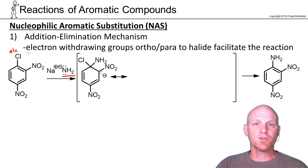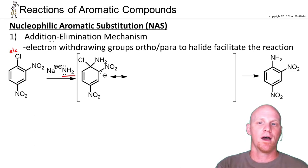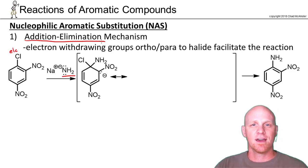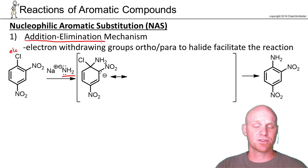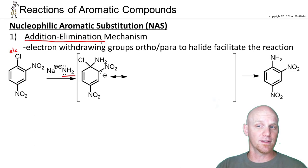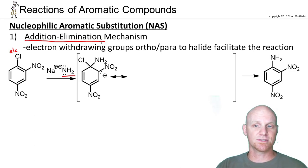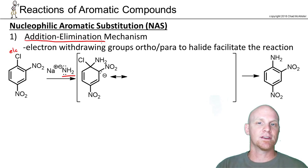It turns out there are two mechanisms and not just one. The first one is called addition-elimination, because there are two steps: the first one is addition and the second one is elimination. The second mechanism is the exact opposite sequence of steps.